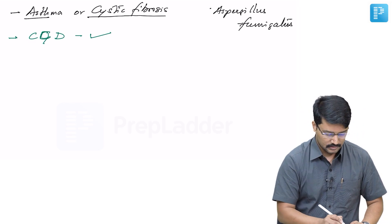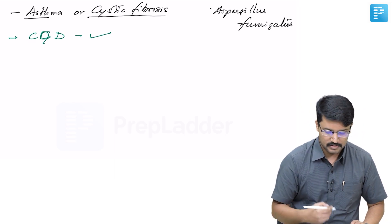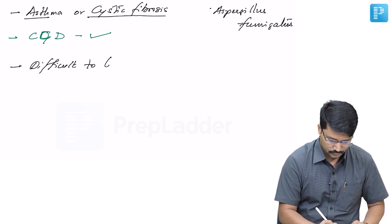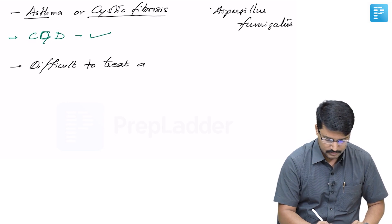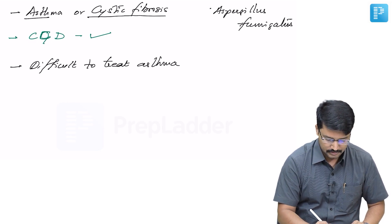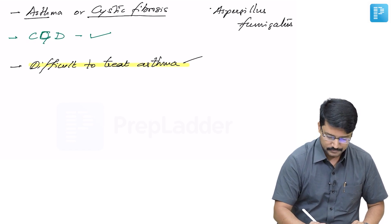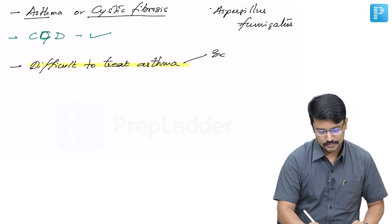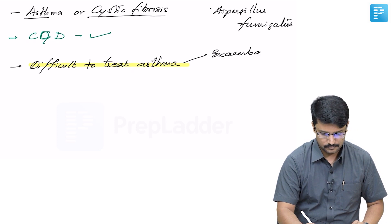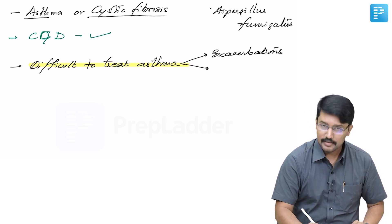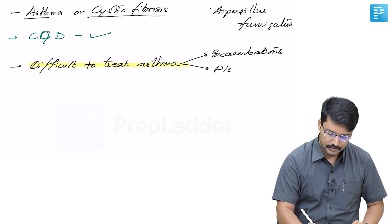We suspect this when patients with asthma or cystic fibrosis present with difficult-to-treat asthma. This is the commonest presentation of ABPA. They have frequent exacerbations and may have fleeting radiological opacities.